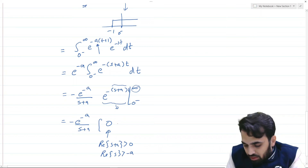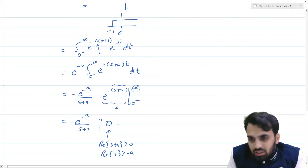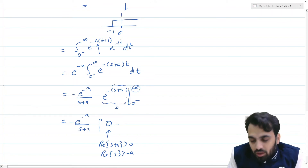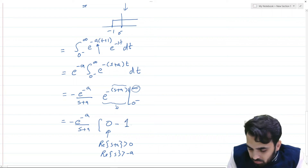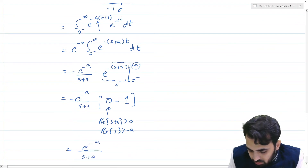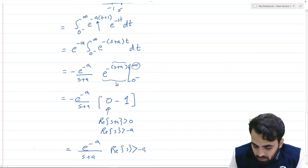Setting t equal to 0 minus (effectively 0), the exponential term becomes e^0 = 1. Hence the unilateral Laplace transform evaluates to e^(-a)/(s+a) with the real part of s greater than minus a. This is our unilateral Laplace transform for x(t) = e^(-a(t+1)) u(t+1).